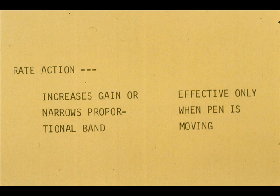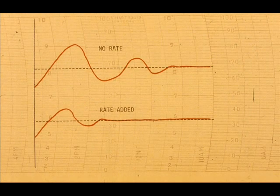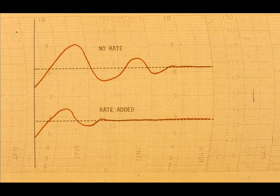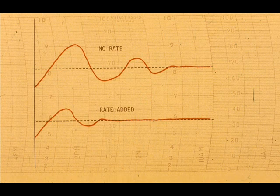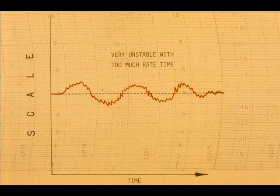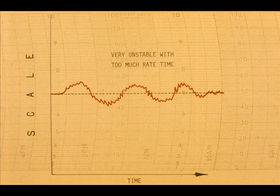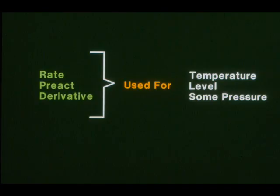Rate action increases the gain while the pen is moving. The increase is directly proportional to the rate at which the pen is moving. Where applicable and up to a certain point, the addition of rate will stabilize a control loop. But too long a rate time will make the system unstable. Rate action is applicable to temperature and level control loops, some pressures, and rarely, if ever, in a flow loop.